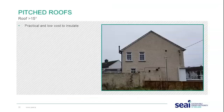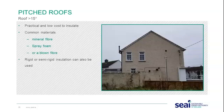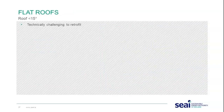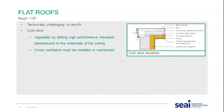Pitched roofs are any roof with a pitch greater than 15 degrees. These are generally low-cost to insulate. Common insulation materials include mineral fibre, spray foam, or blown fibre, and rigid or semi-rigid insulation can also be used. The target scheme U-value for insulation at ceiling level is 0.16. Flat roofs — those with a pitch less than 15 degrees — are sometimes technically challenging to retrofit.